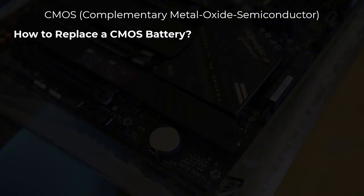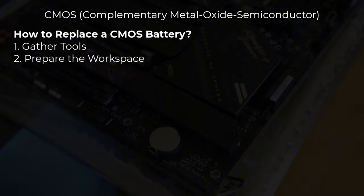How do you replace the CMOS battery? Replacing it is straightforward but requires care. First, gather your tools: you'll need a screwdriver, a new CMOS battery — usually a CR2032 — and ideally an anti-static wrist wrap. Second, prepare the workspace by working on a clean, static-free surface, avoiding carpeted areas. Third, turn off the computer, shut it down, and unplug all cables.